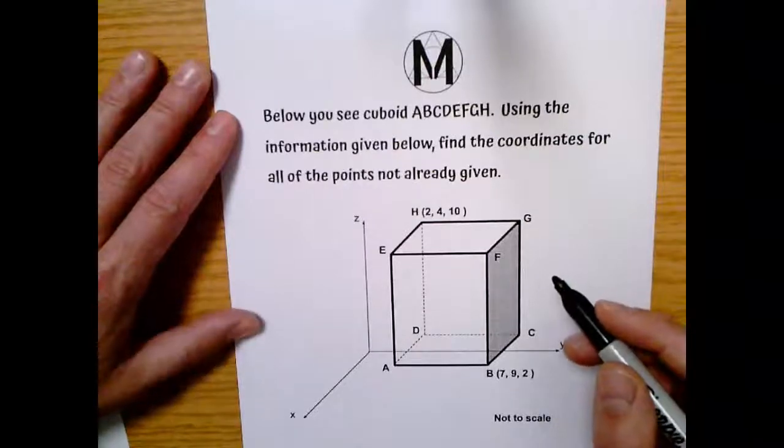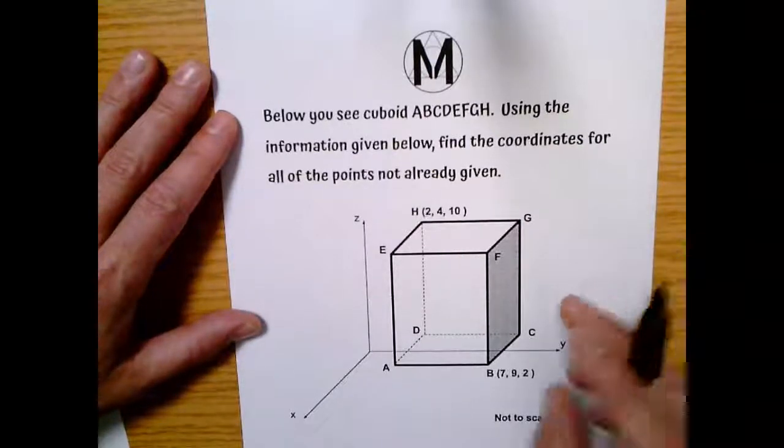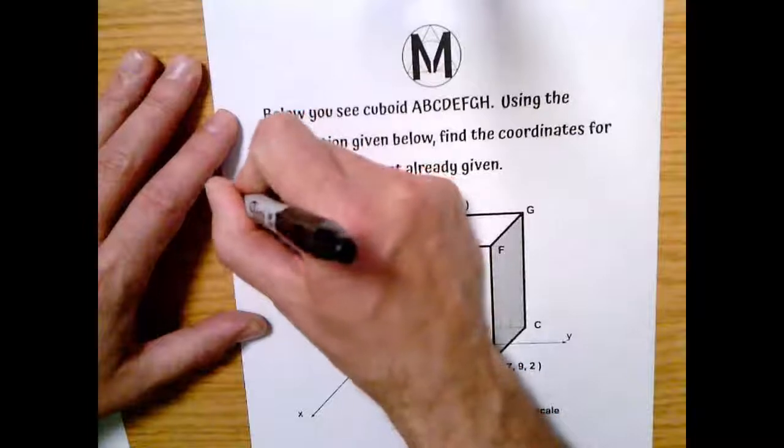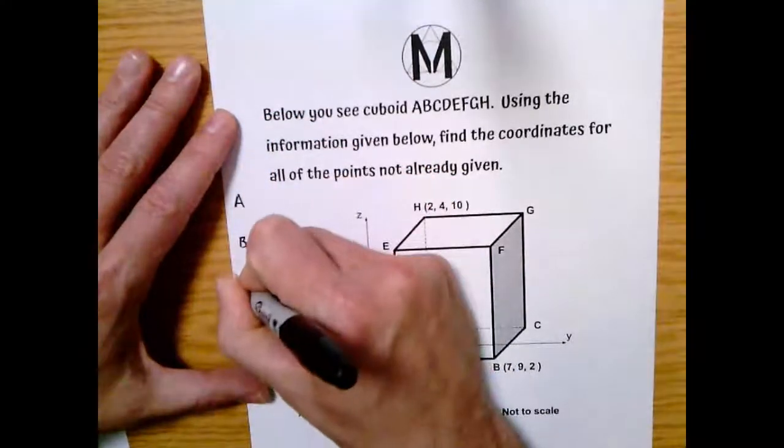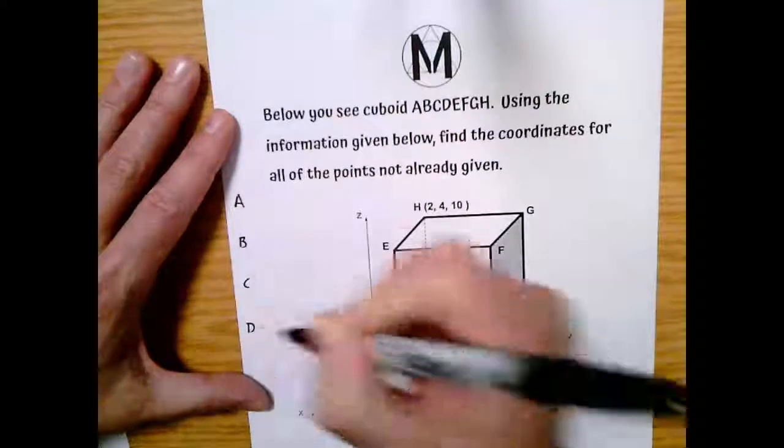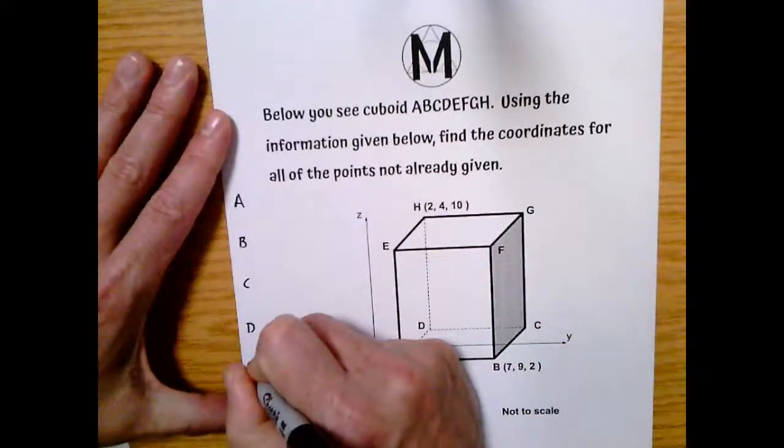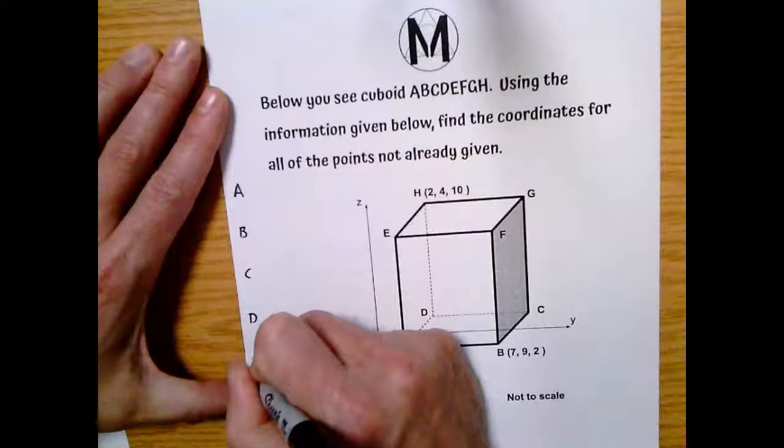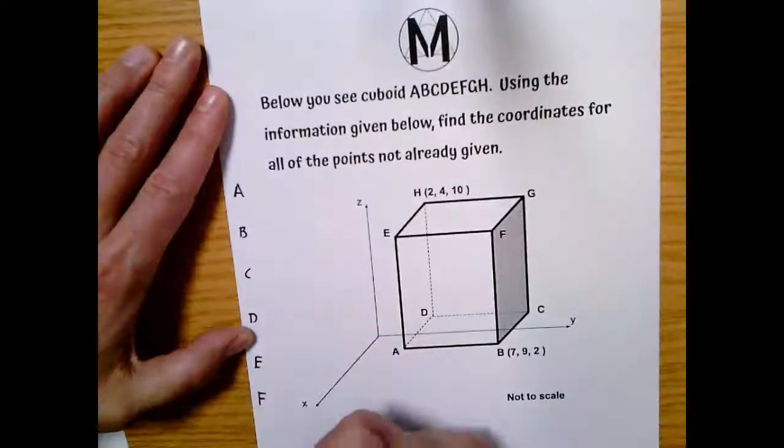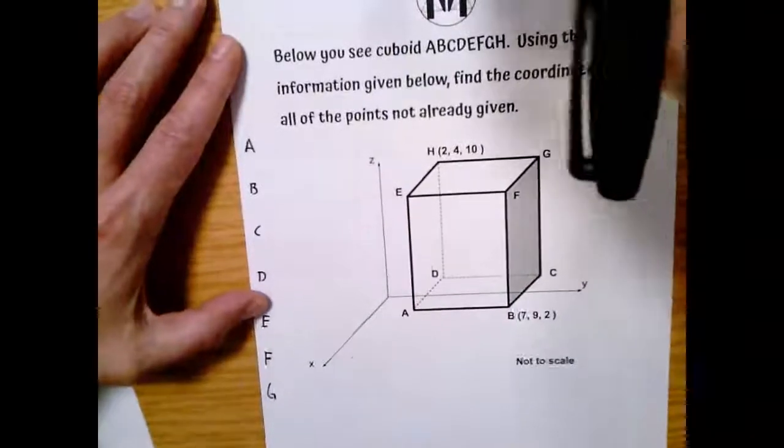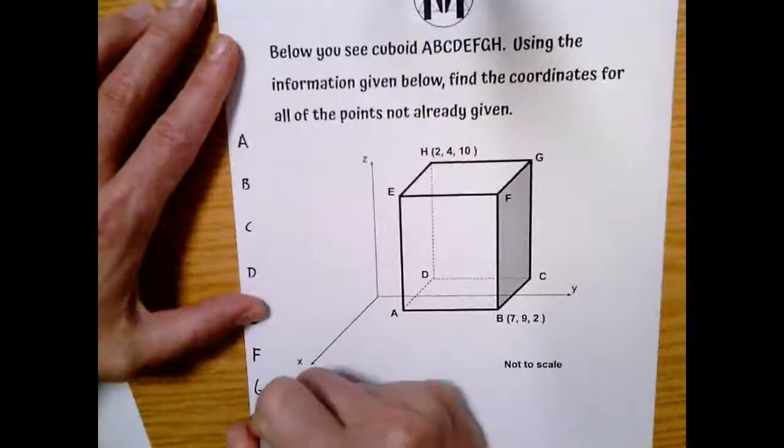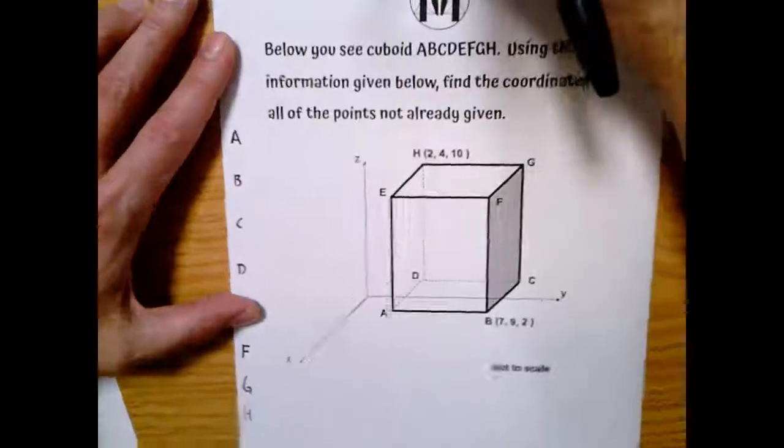No big deal right there. Okay, so when we look at this, we are ultimately looking for point A, point B, point C, point D, and then I'm going to run out of space here, E, F, G, and H. Okay, we can handle this.